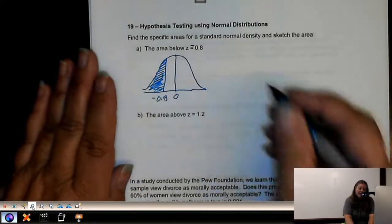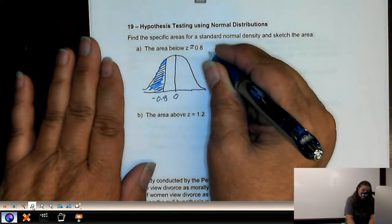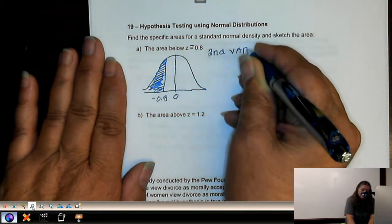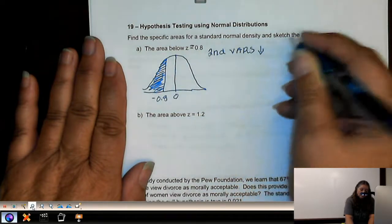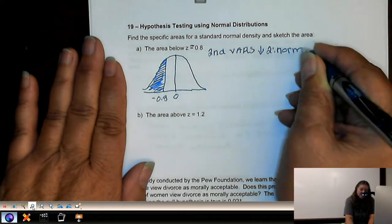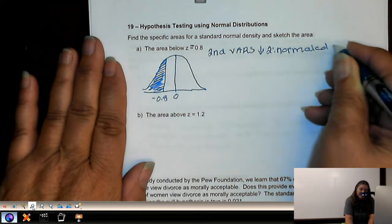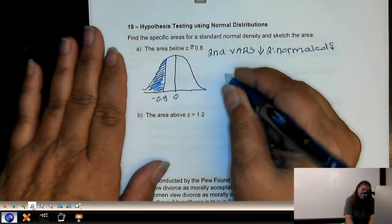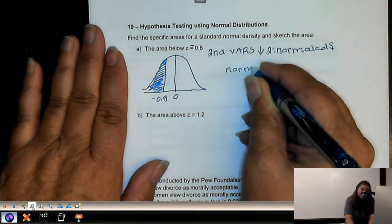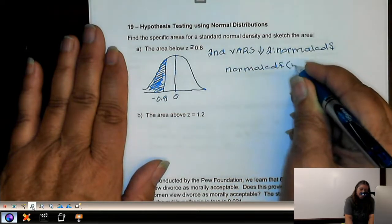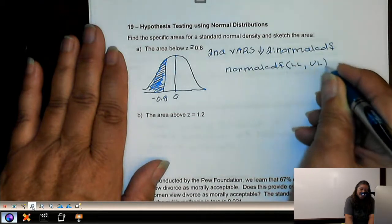In order to find the value, we're going to go on the calculator to second VARs, then we're going to go down to number 2, which says normal CDF. And then depending on your calculator, you'll either be asked questions or you'll have to enter numbers. And basically what you're going to end up with is normal CDF, the lower limit, and the upper limit.